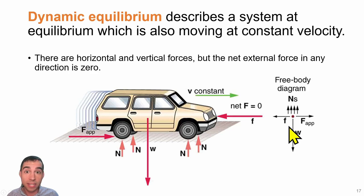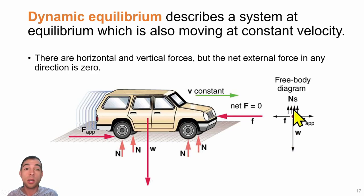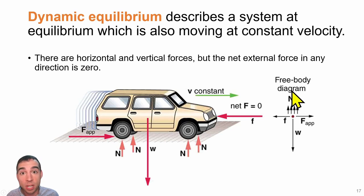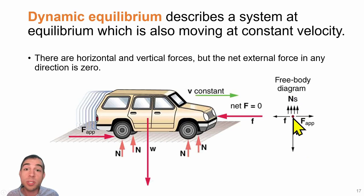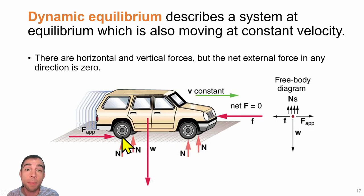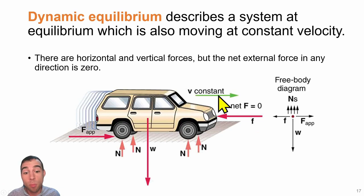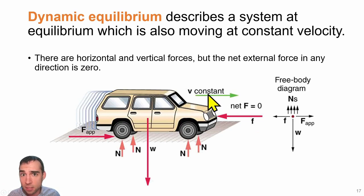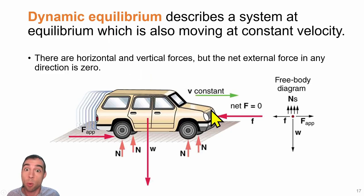Also, we can have a gravitational force pulling down on the object and normal forces acting up, such that the gravitational force cancels out when we add up all the normal forces applied by each tire of the car. Here we have an object moving at constant velocity but with all forces canceling, so we're in dynamic equilibrium with a net force of zero.